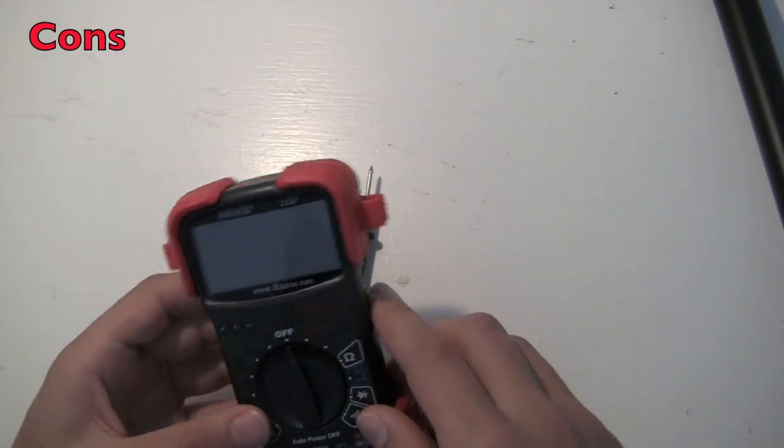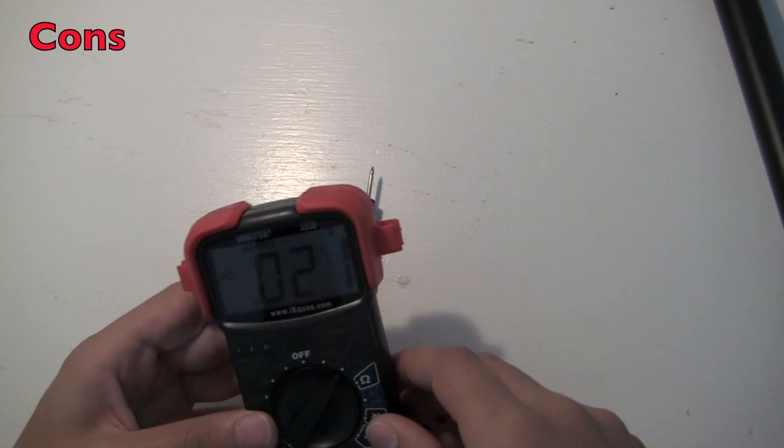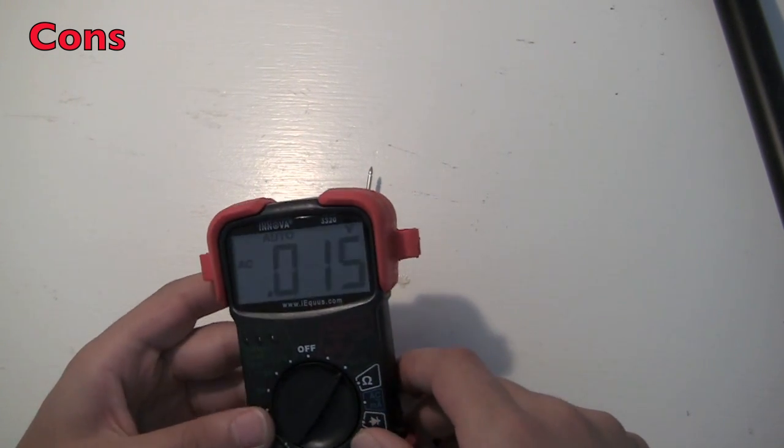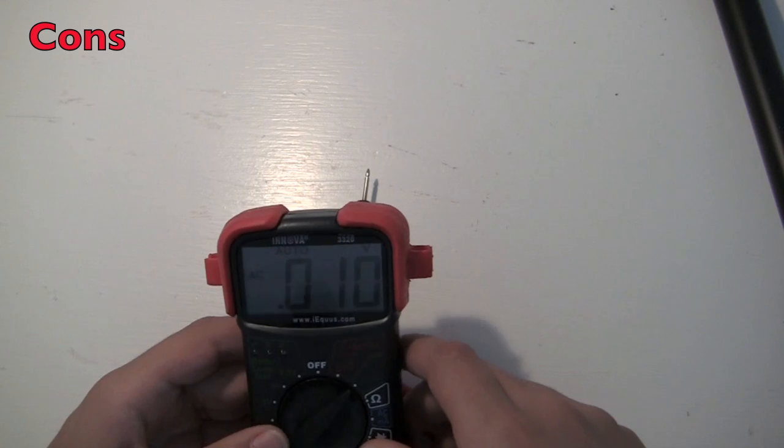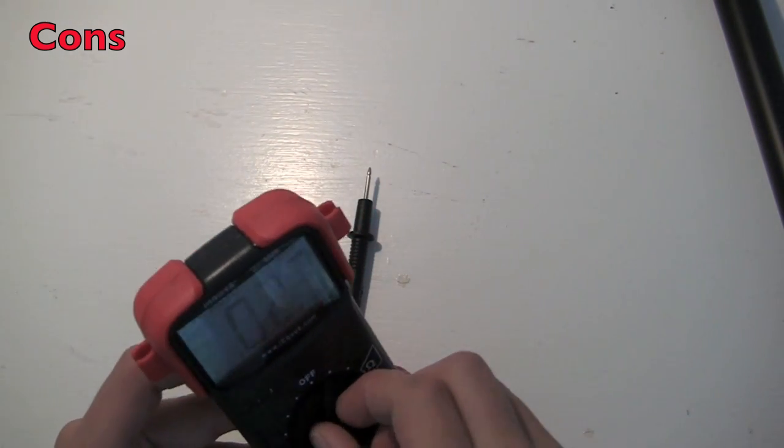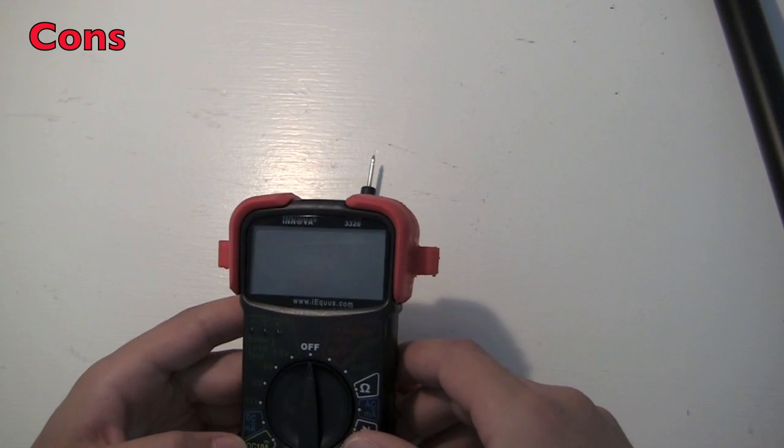Another disadvantage is that this multimeter can't measure very high AC voltage. It only can measure like 0.2 amps or 200 milliamps, which is not really useful for measuring AC voltage at all, because usually it comes in bigger voltages.